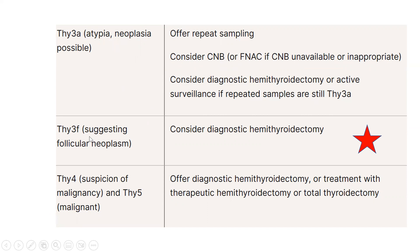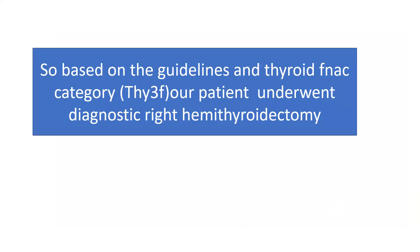For Thy3F, as in our patient, consider diagnostic hemithyroidectomy — suggestive of follicular neoplasm. For Thy4 (suspicious of malignancy) and Thy5 (malignant), offer diagnostic hemithyroidectomy or treatment with therapeutic hemithyroidectomy, or preferably total thyroidectomy, especially for Thy5. Based on the guidelines and Thy3F result, our patient underwent diagnostic hemithyroidectomy.